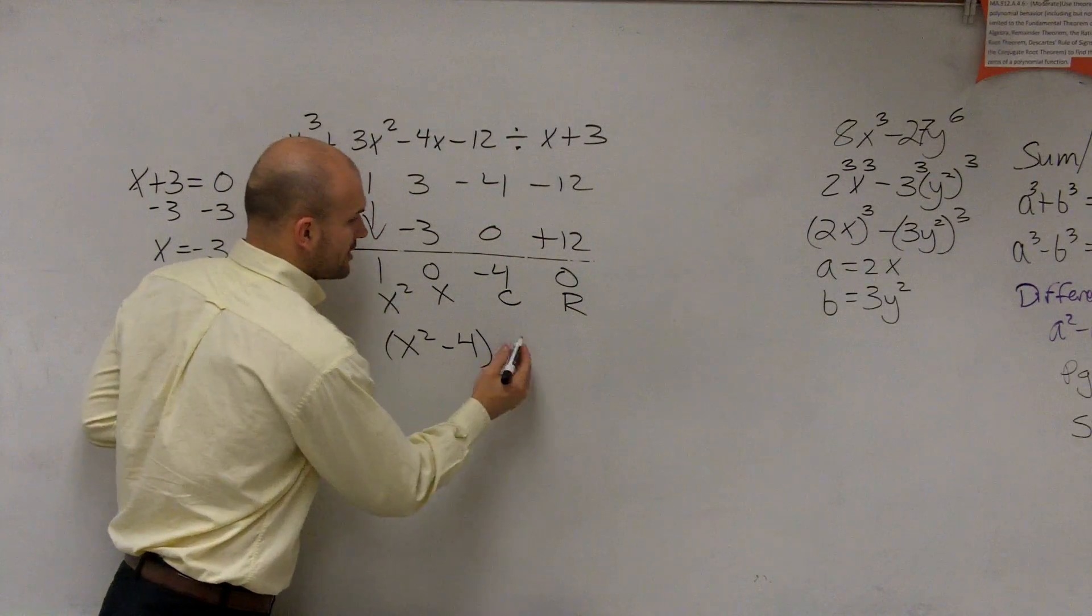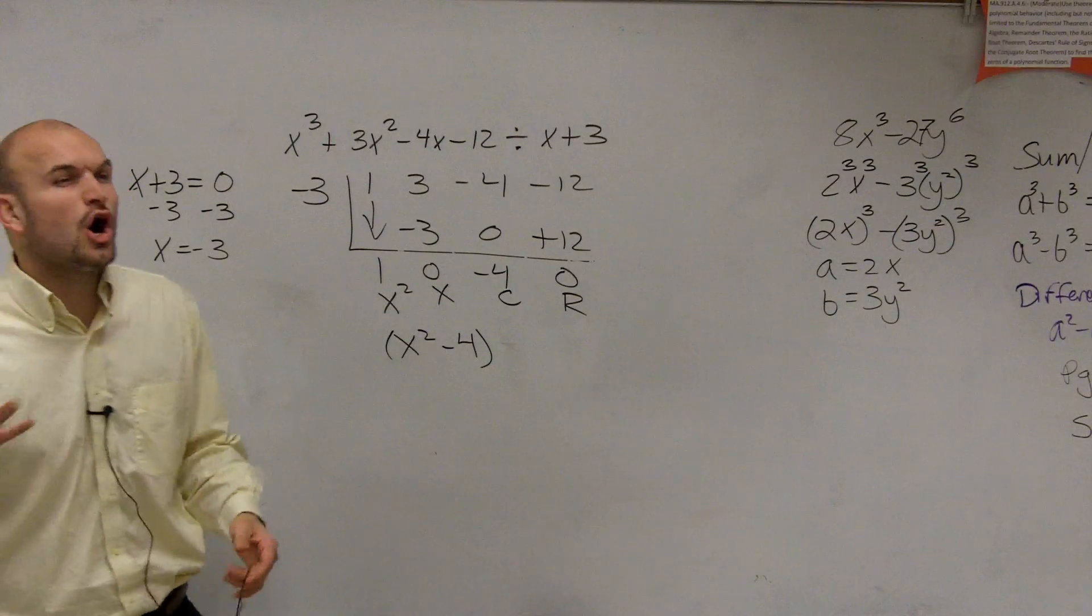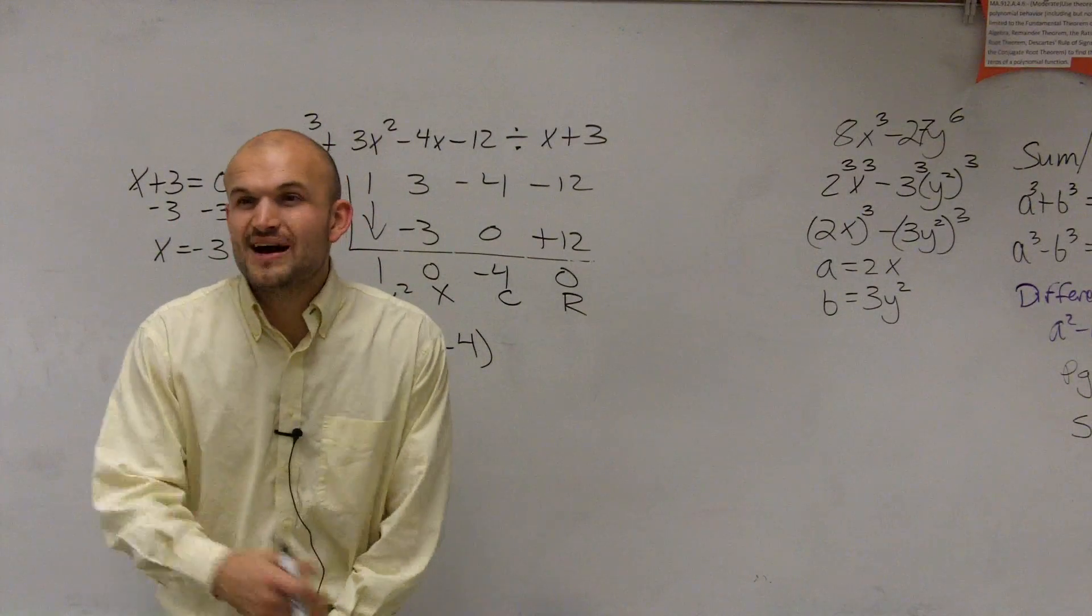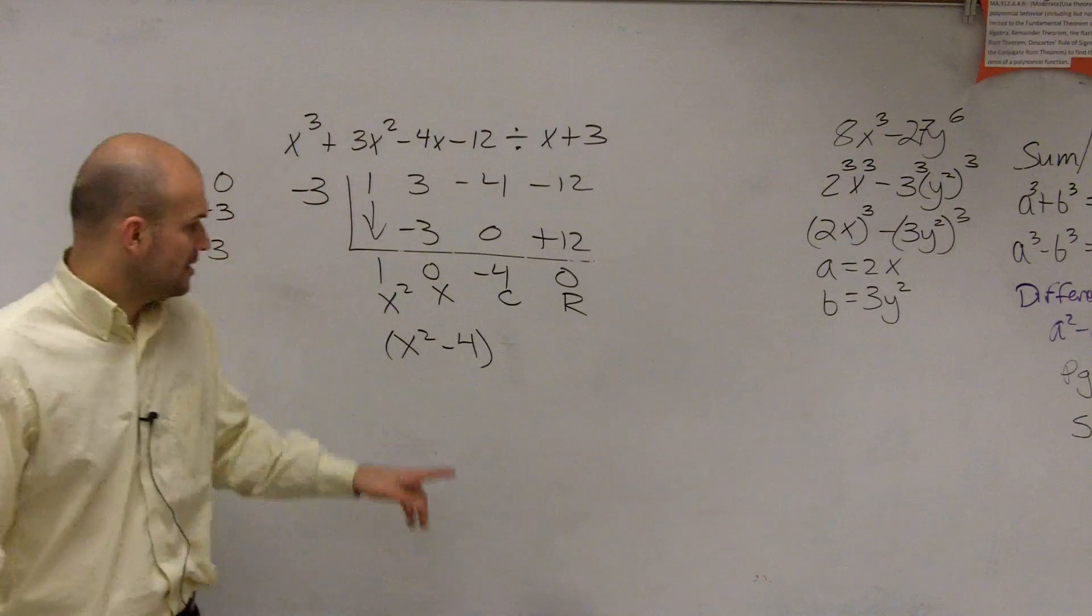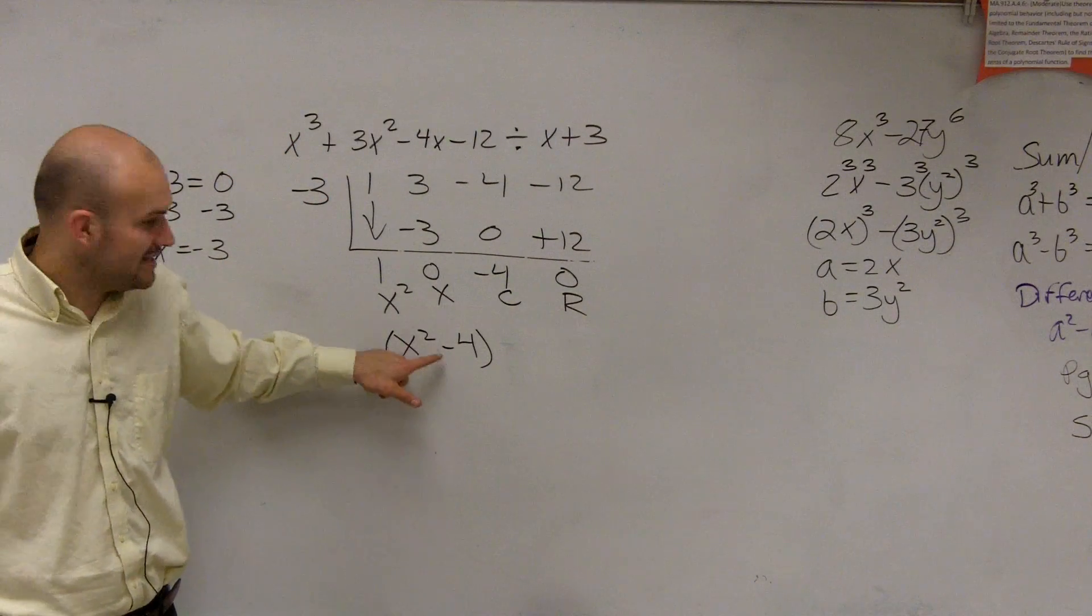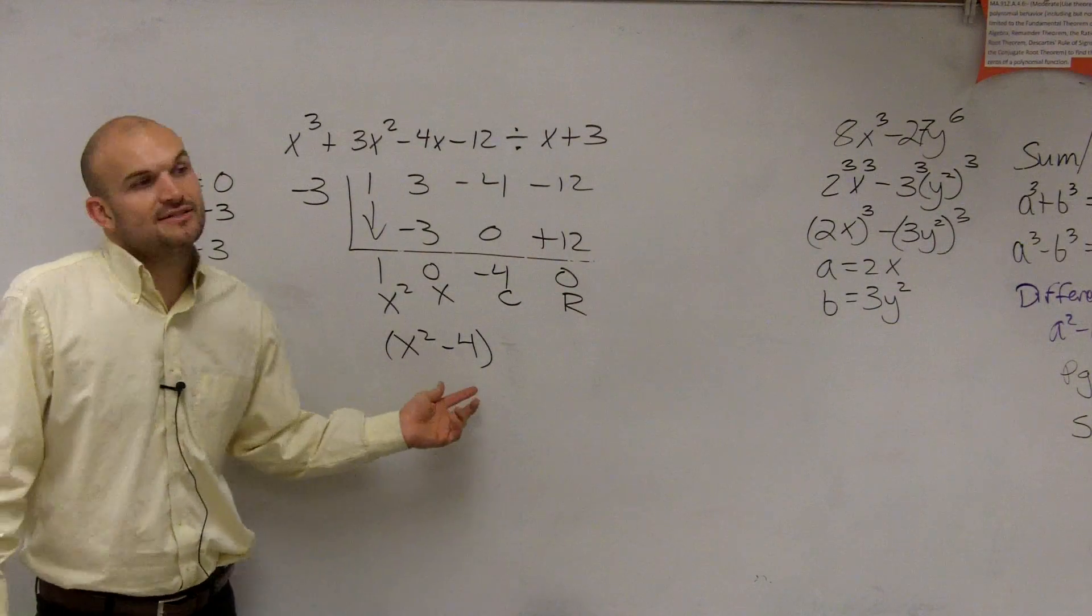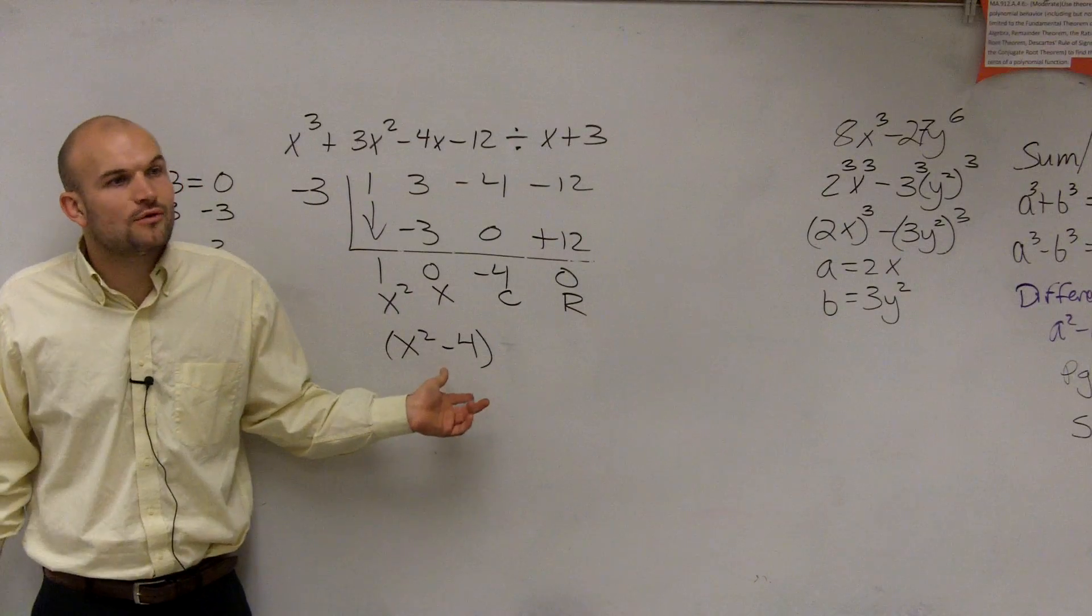Now, what we're going to do for our homework is, before even writing this other factor, we're going to ask, find all of the factors. So how do you find all of the factors? Well, we need to see, can we factor this down to our linear factors? Is our answer linear? No, it's quadratic. So we have to see if we can factor x squared minus 4.